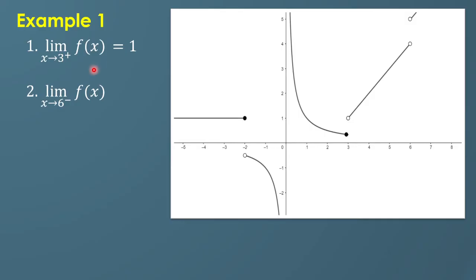Let's say we have the limit of f of x as x approaches 6 from the left. This is x equals 6, and the left-hand side is this part. Tracing the graph from the left side of 6 and getting closer to 6, the y values get closer to 4.